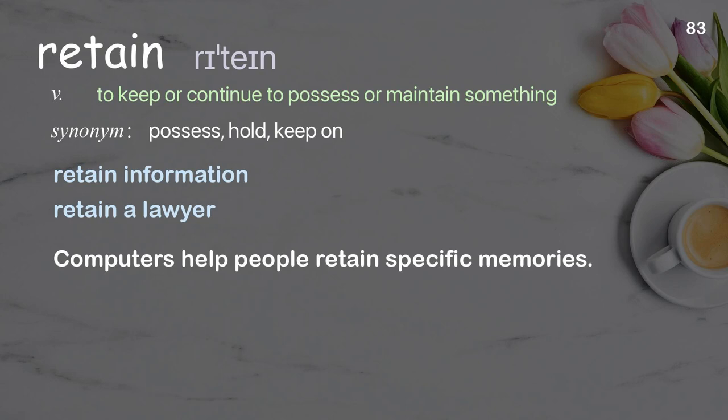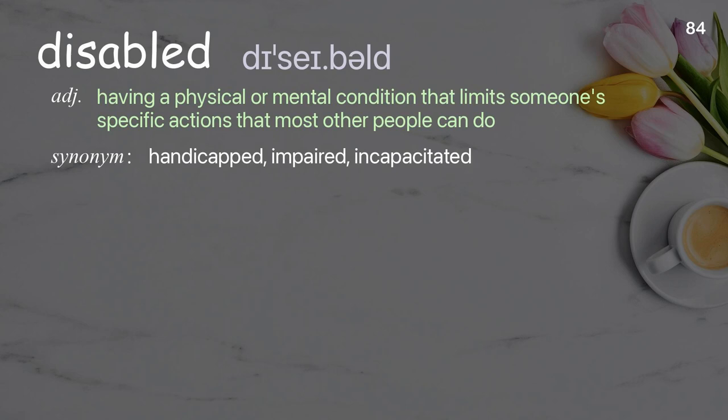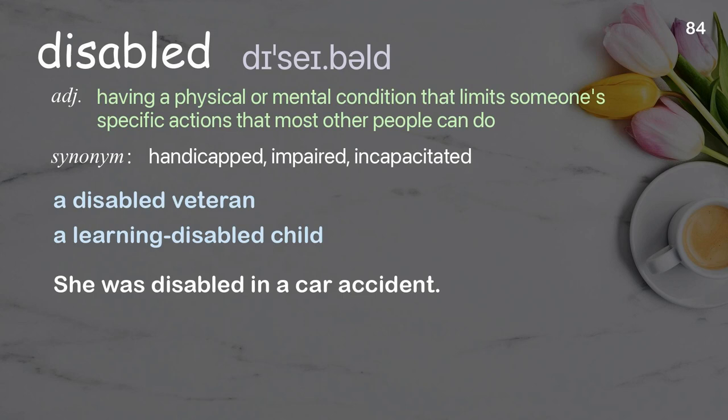Disabled: having a physical or mental condition that limits someone's specific actions that most other people can do. Examples: a disabled veteran, a learning-disabled child. She was disabled in a car accident.